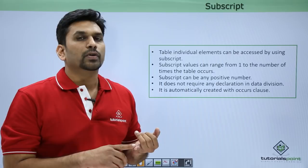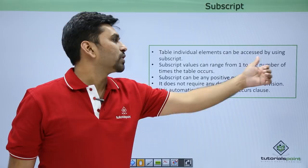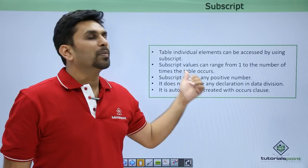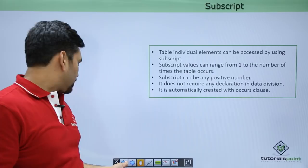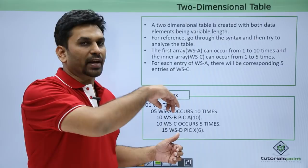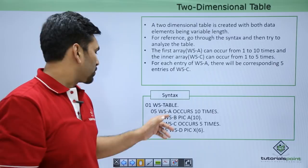To access data in an array we have two options: subscript and index. With subscript, individual table elements are accessed using a subscript value ranging from 1 to the number of times the table occurs. You do not need to declare it — it is automatically created with the OCCURS clause. For example, to access the second occurrence you write WS-A(2).